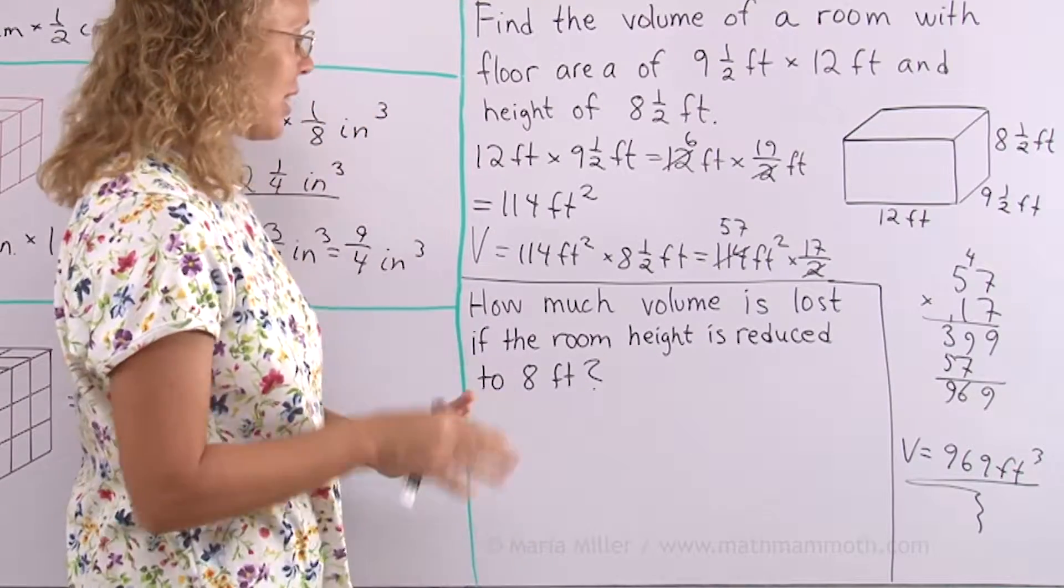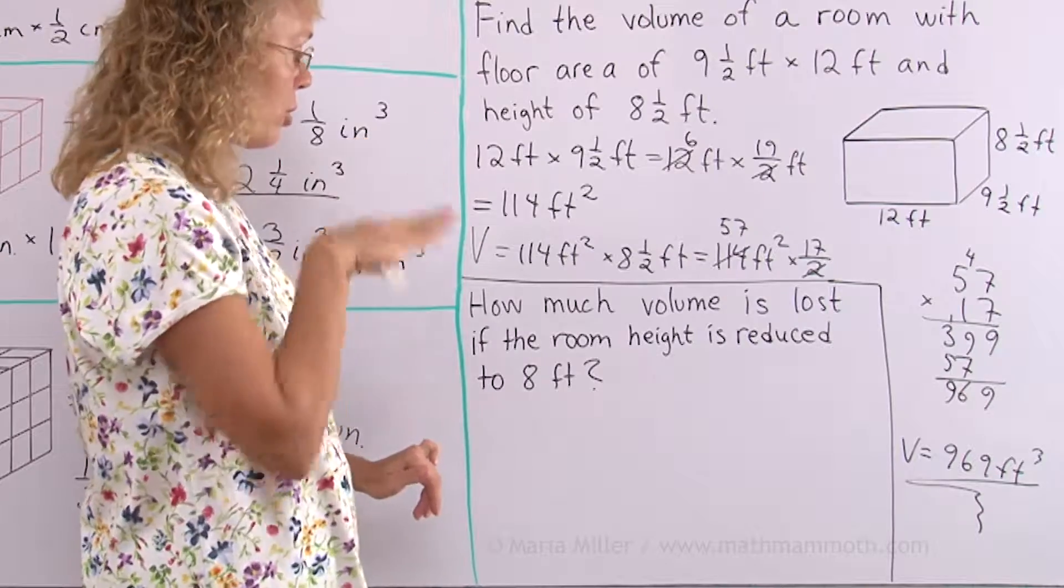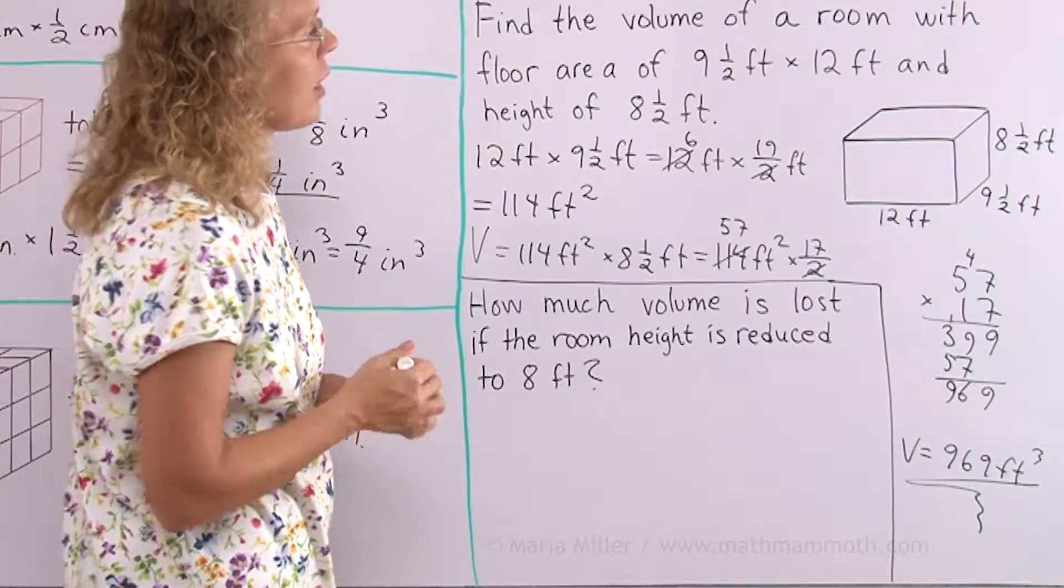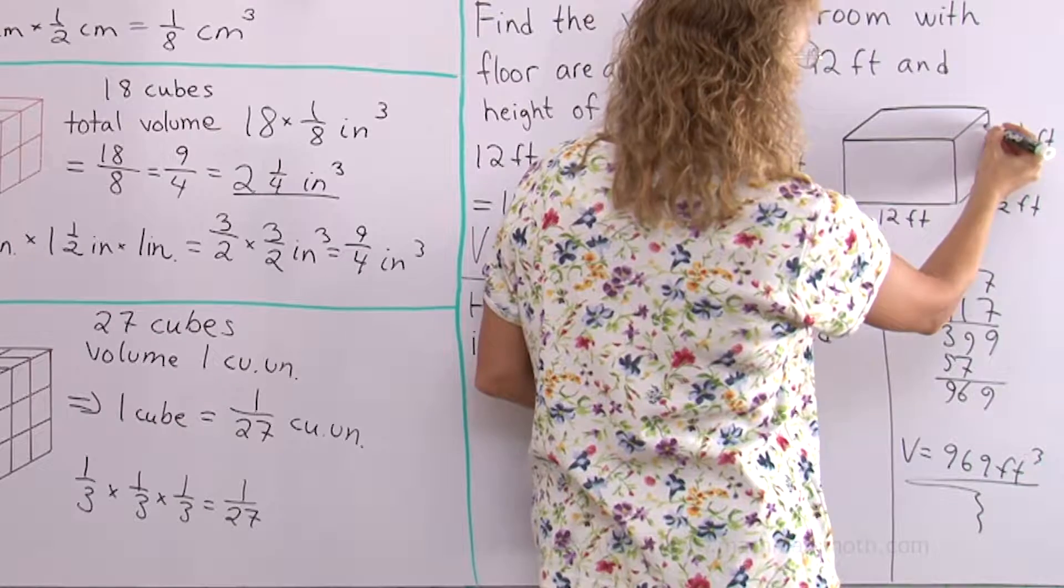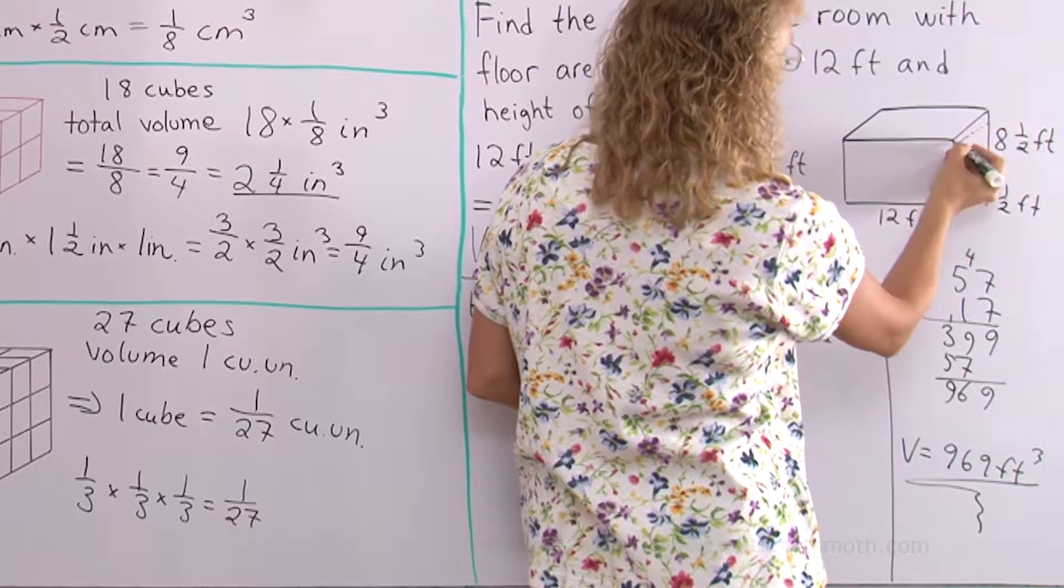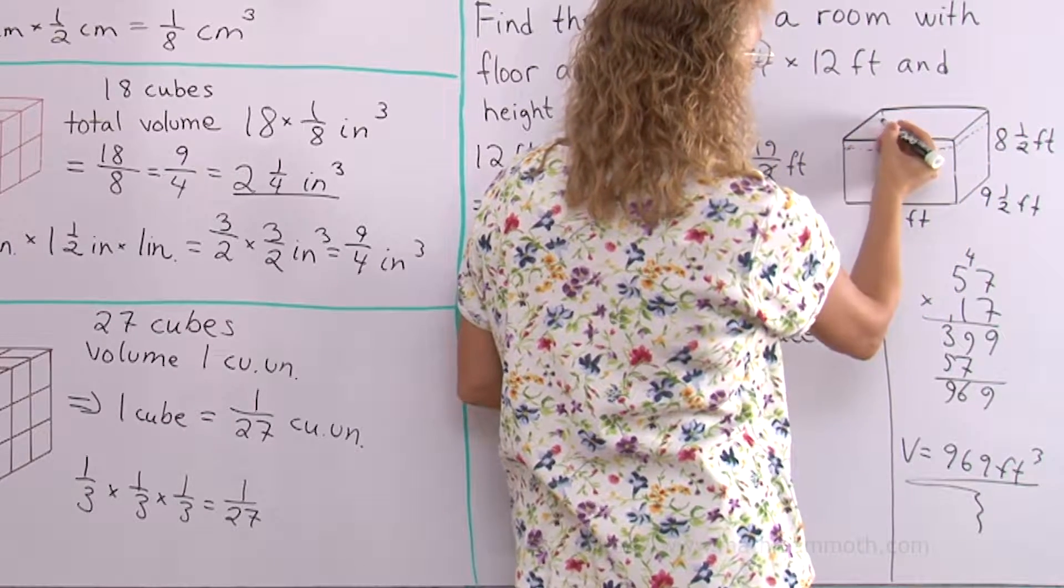Now, how much volume is lost if the room height is reduced to 8 feet? If the room height is reduced to 8 feet, it will go somewhere here. How much volume is lost then?